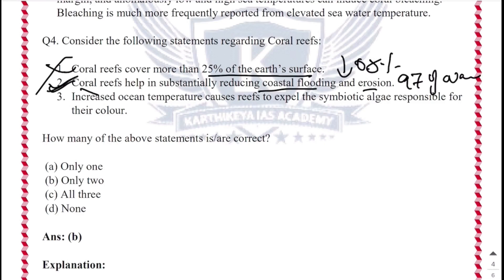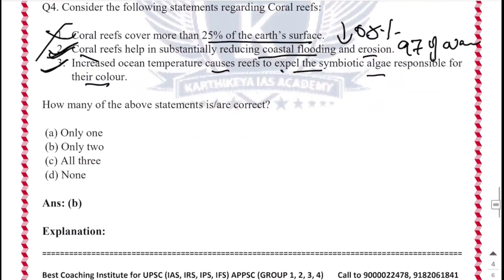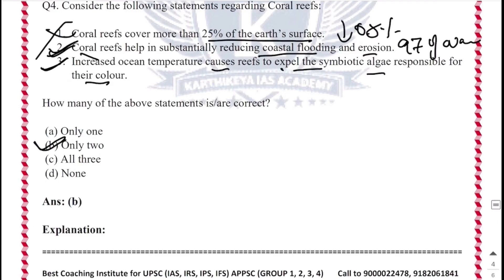Statement 3: Increased ocean temperature causes reefs to expel the symbiotic algae, which is responsible for their color. This statement is also correct. When ocean temperature increases, the algae present with the coral gets expelled, and since the algae gives color to the coral reefs, this leads to coral bleaching. So statements 2 and 3 are correct, and the correct answer is option B — only two statements are correct.